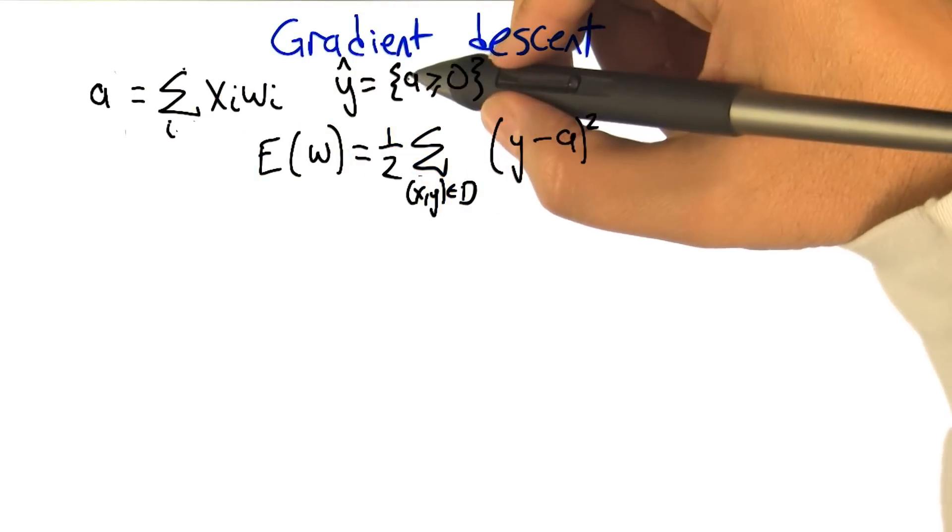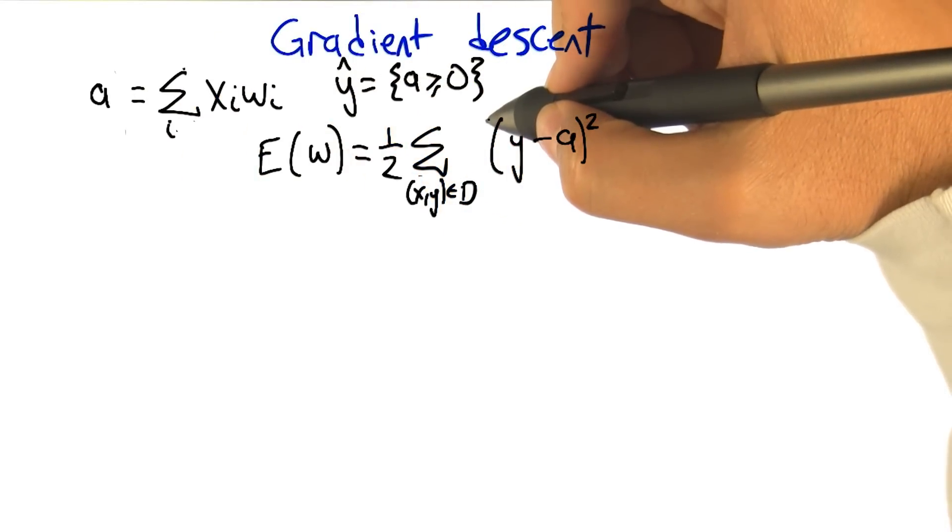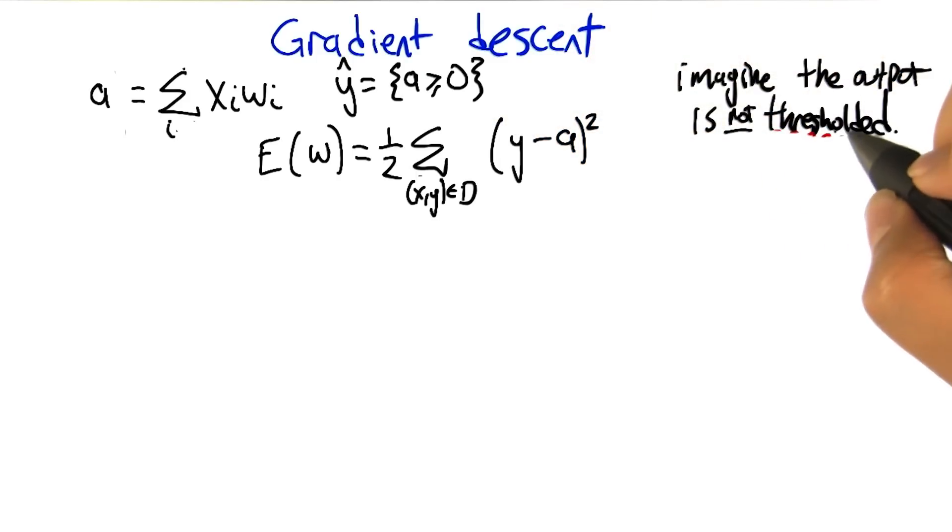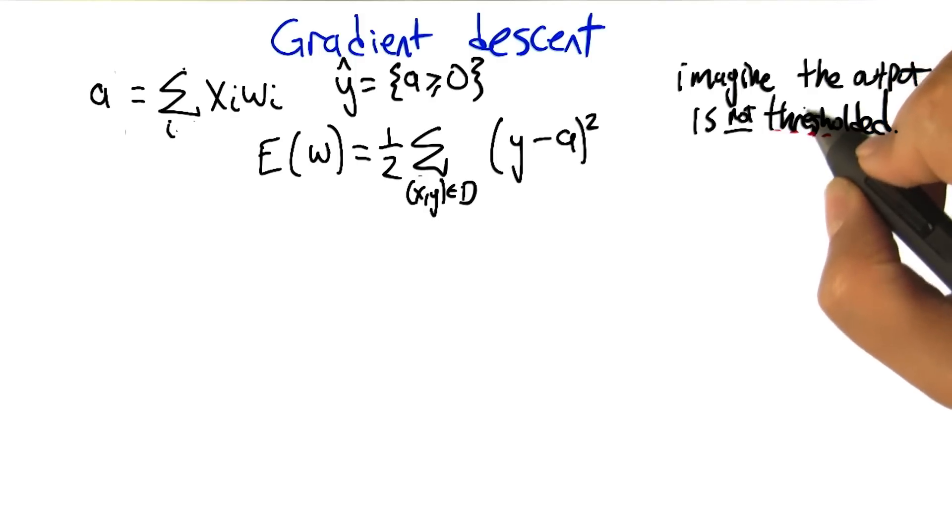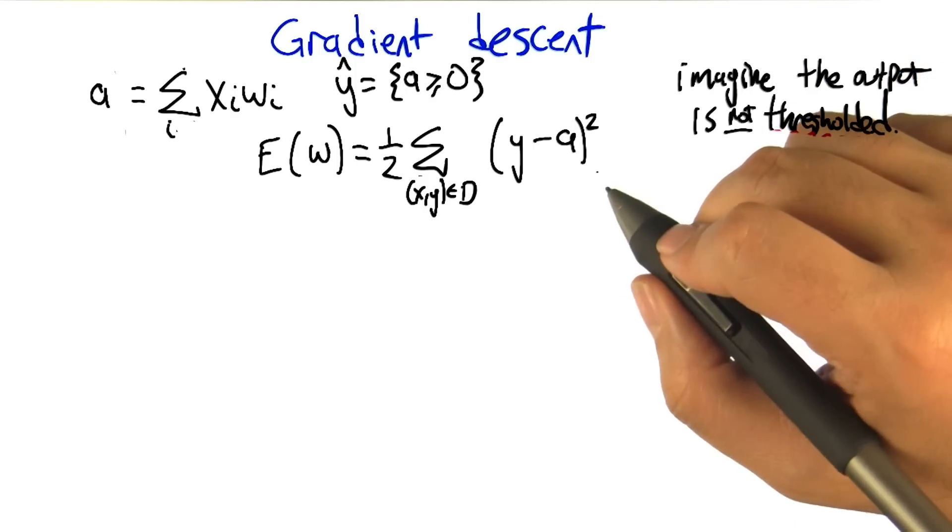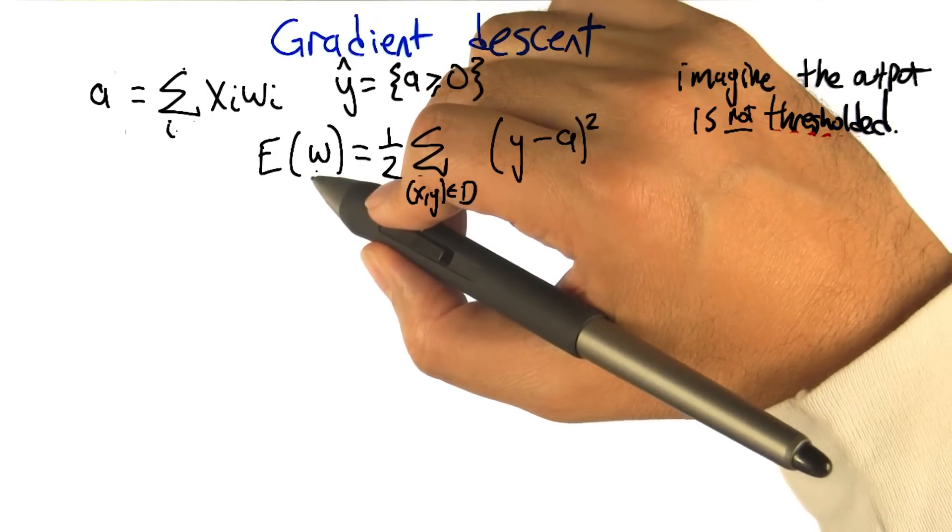And then we have our estimated output as whether or not that activation is greater than or equal to zero. So let's imagine that the output is not thresholded when we're doing the training. And what we're going to do instead is try to figure out the weights so that the not thresholded value is as close to the target as we can. So this actually kind of brings us back to the regression story. We can define an error metric on the weight vector w.